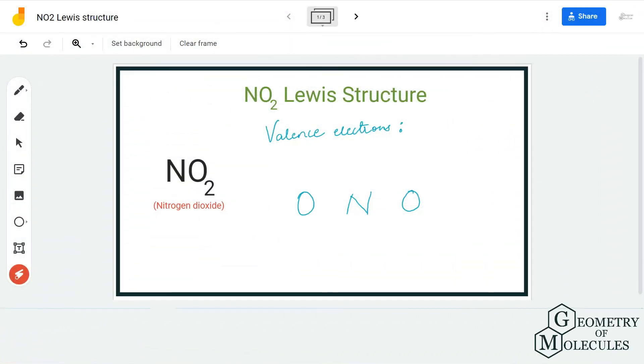Hi guys, welcome back to our channel. In today's video we are going to help you determine the Lewis structure for NO₂, the chemical formula for nitrogen dioxide. To determine its Lewis structure, we need to know the total number of valence electrons for this molecule.